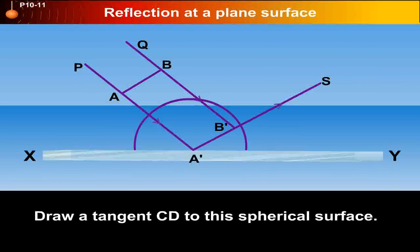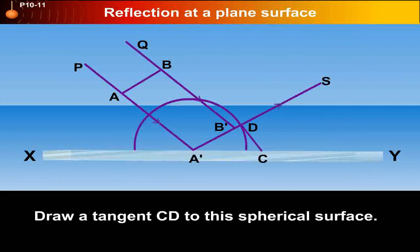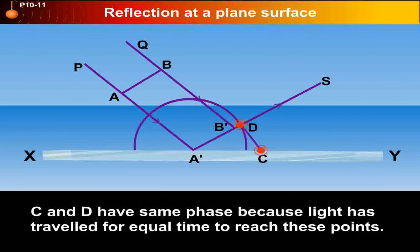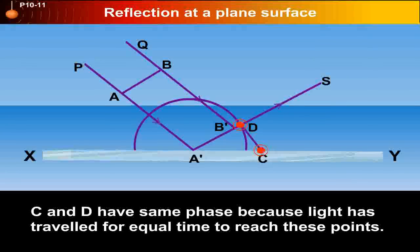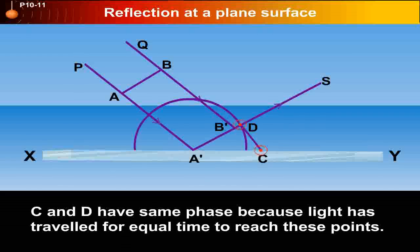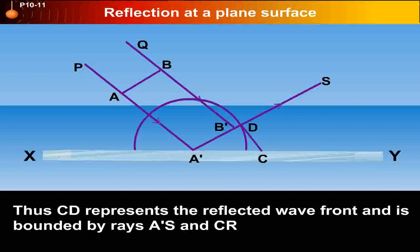Draw a tangent CD to this spherical surface. C and D have the same phase because light has travelled for equal time to reach these points.